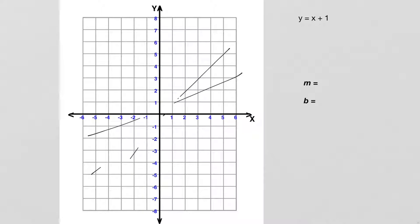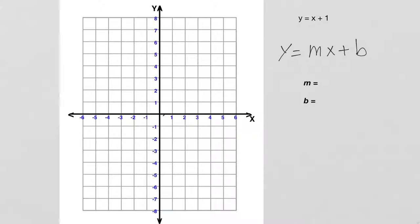Another thing we have to talk about is why we have an equation for describing our lines. Every line is described by the general equation y = mx + b. What that means is that at any place on the y-axis, we're going to know what the x coordinate on that line should be by using our formula. We need to find the slope and the y-intercept for the line.